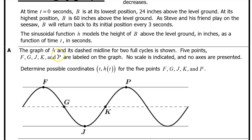Part A. The graph of h and its dashed midline for two full cycles is shown. Five points F, G, J, K, and P are labeled on the graph. No scale is indicated and no axes are presented. Determine possible coordinates for the five points F, G, J, K, and P.